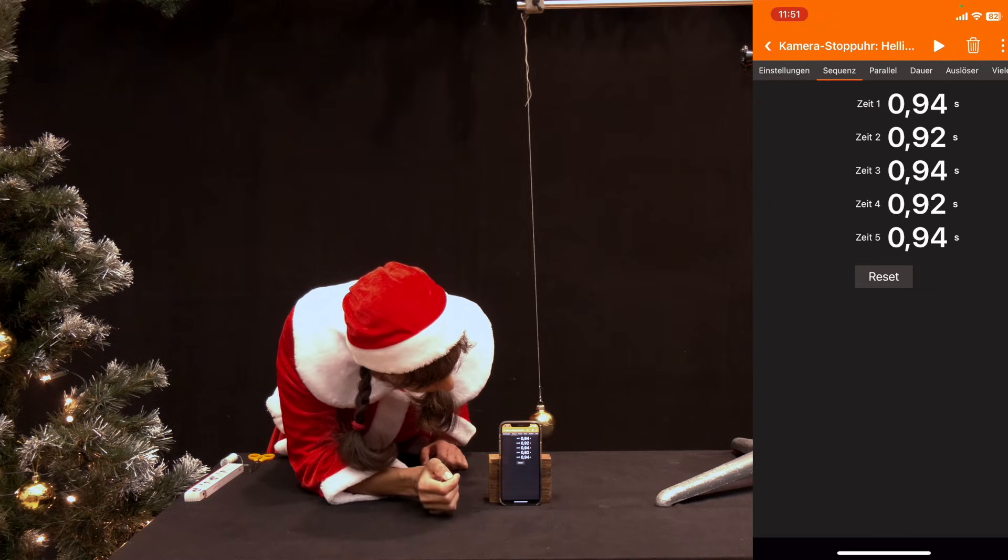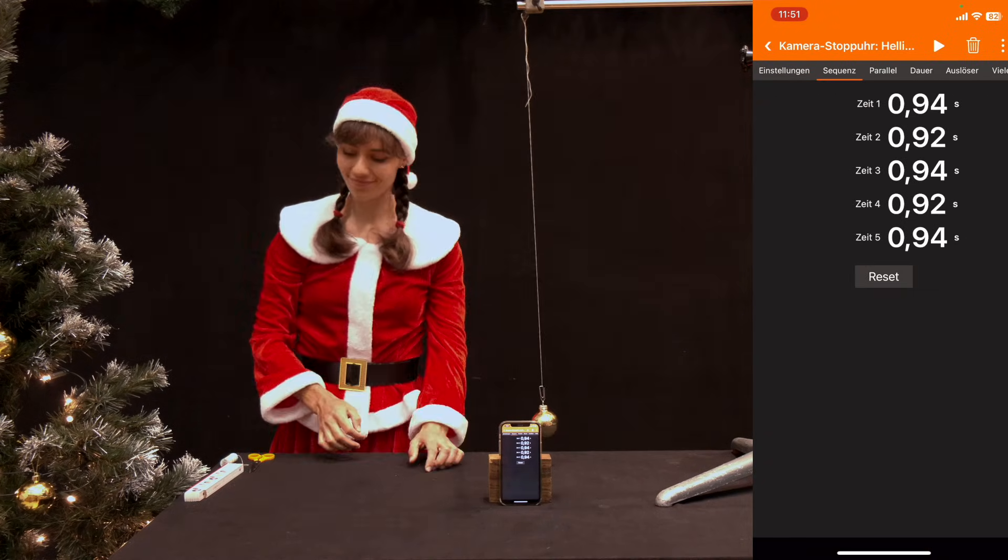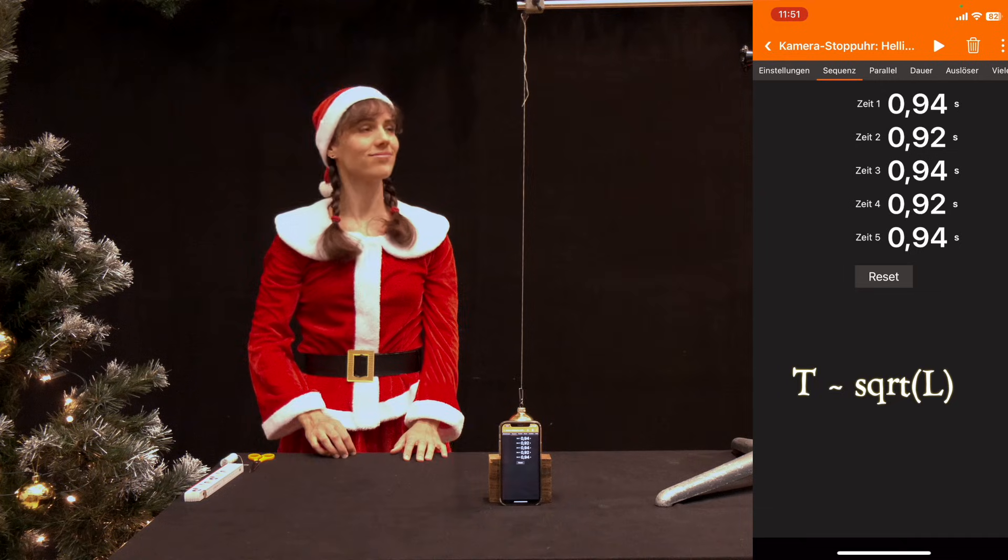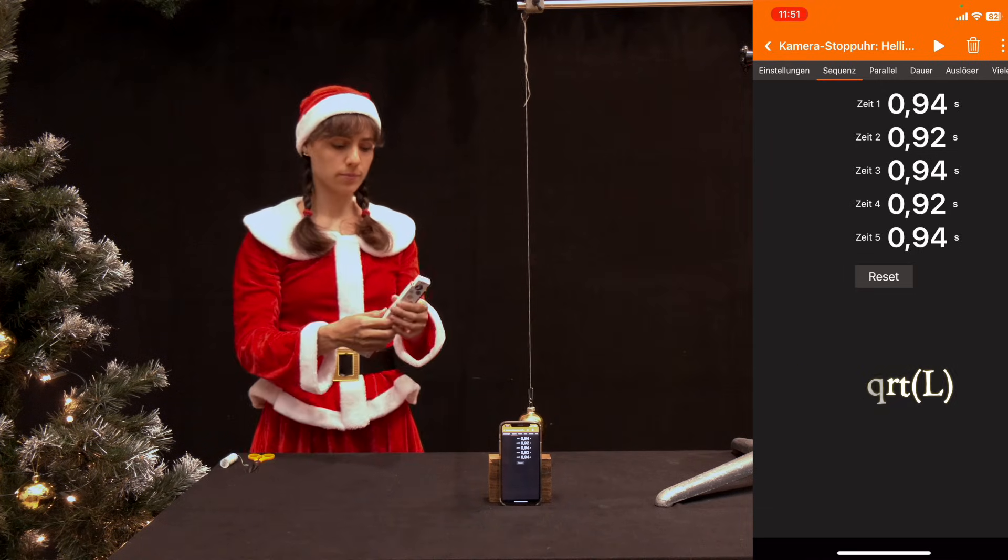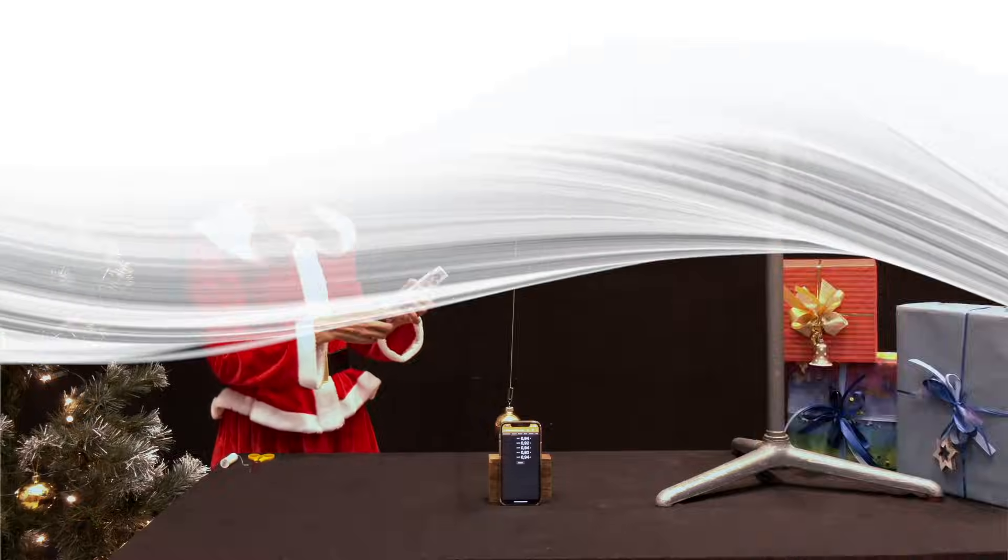It is easy to calculate that the period of oscillation T depends on the square root of the pendulum length L, i.e., T² ~ L. Long pendulums therefore have a longer oscillation period than short ones.